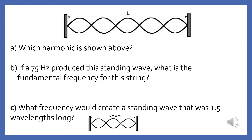What frequency would create a standing wave that was 1.5 wavelengths long? A standing wave that is 1.5 wavelengths long would have 3 antinodes. Since the fundamental for this length is 15 Hz, a frequency of 45 Hz would produce a wave with 3 antinodes.